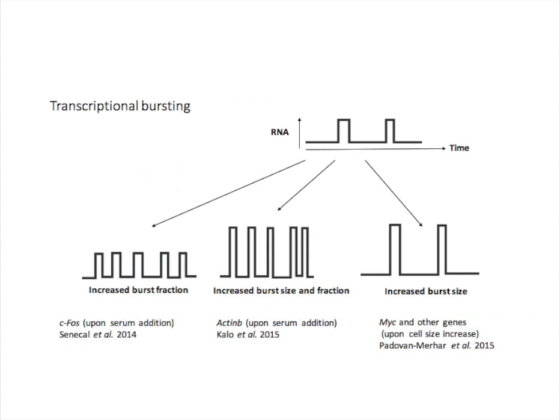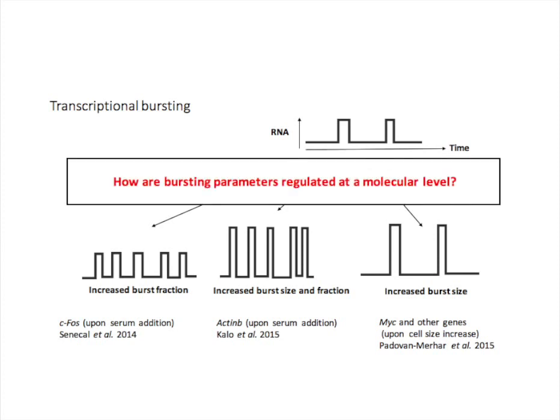For example, what happens when transcription of a gene is increased during cellular differentiation? The gene could transcribe more of the time, which we will call a higher burst fraction. Or it could transcribe just as often, but produce more RNA molecules per transcriptional event, which I'll call higher burst size. Or both these parameters could increase. Different groups have observed each of these three options in various genes in various settings. However, we don't have a clear understanding of the molecular regulation of these choices. This is the question we set out to answer.